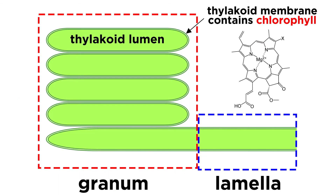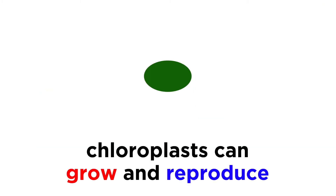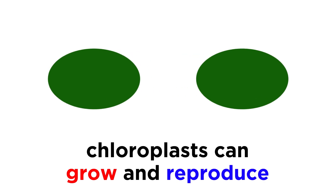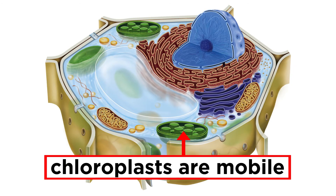Chlorophyll, the pigment molecule that gives leaves their green color, is present in the membrane of the thylakoids, and these are the molecules that initially absorb the energy from sunlight to set photosynthesis into motion. Chloroplasts can grow and reproduce on their own, and they are also mobile within the cell, moving around on the cytoskeleton.